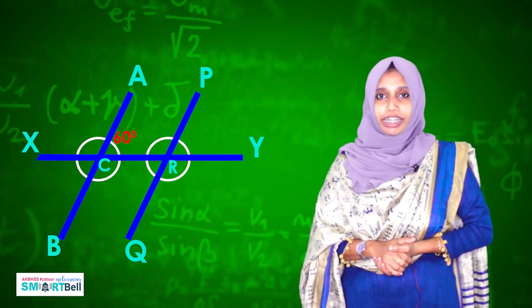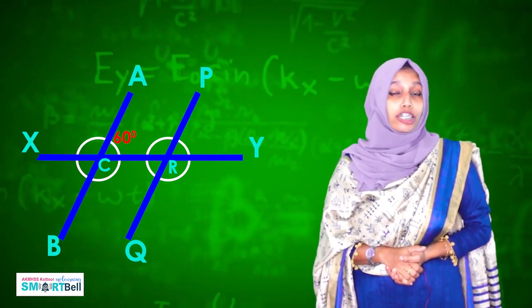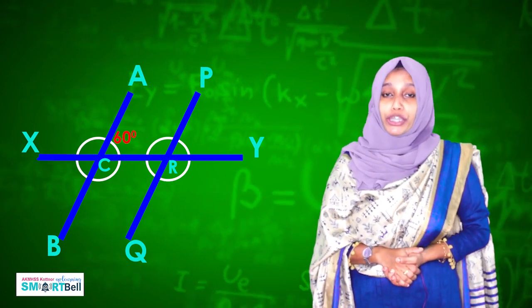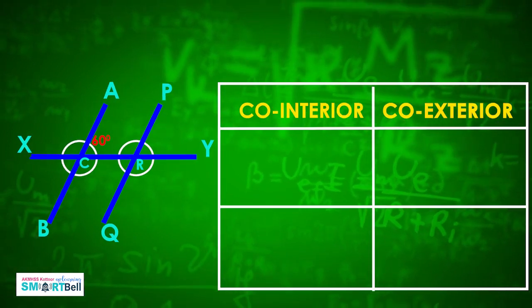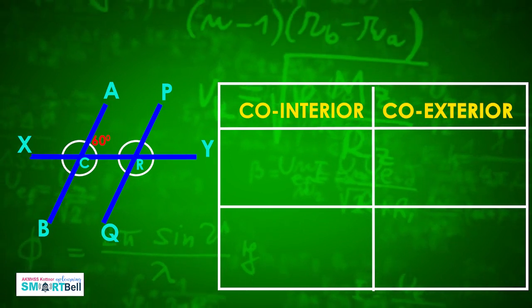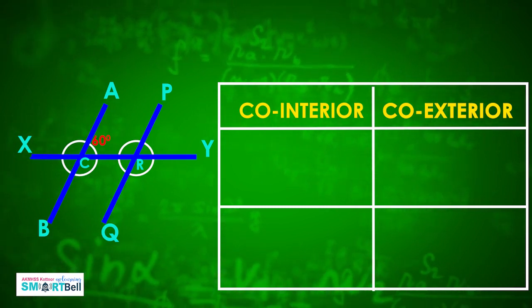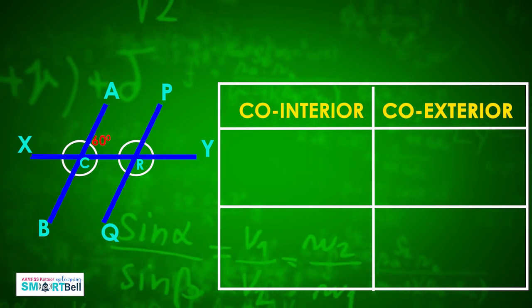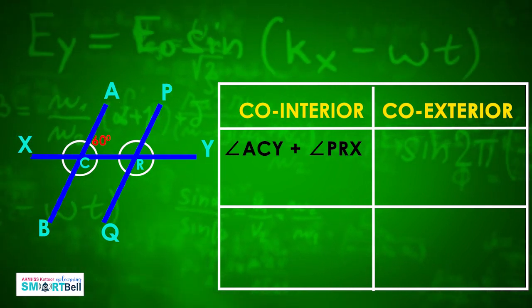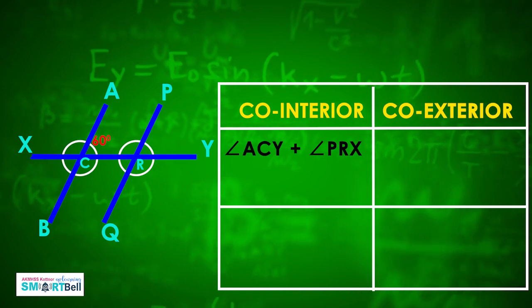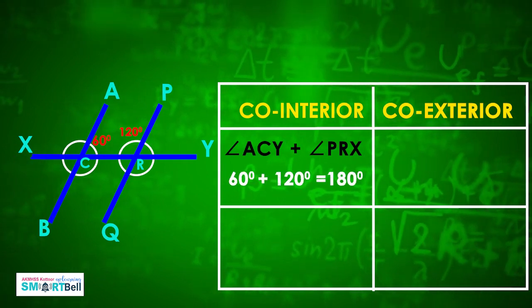Take page number 27 in your textbook. Let's do this work. In this figure, lines AB and PQ are parallel and line XY cuts them at C and R. We need to find the pairs of co-interior and co-exterior angles. The first pair of co-exterior angles is angle ACY and angle PRX. We know angle ACY is 60 degrees and angle PRX is 120 degrees, so their sum is 60 plus 120, equal to 180 degrees.